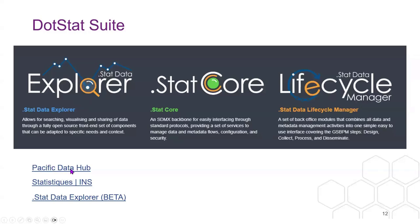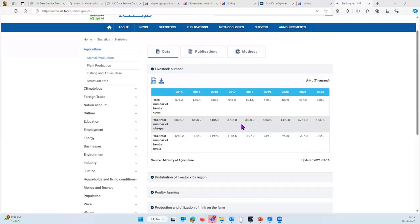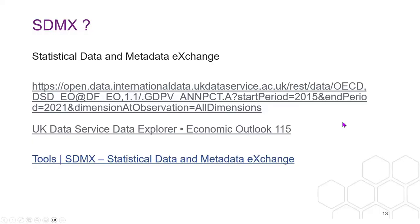For example, the Pacific Data Hub uses dotstat at stats.pacificdata.org — you might notice similarities with our own interface. Similarly, INS in Tunisia has an interface that looks different on the surface but is running dotstat behind it.